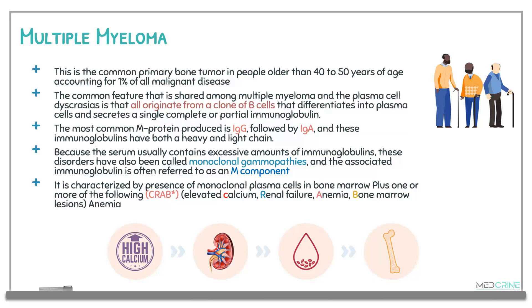Because the serum usually contains excess immunoglobulins, these disorders are known as monoclonal gammopathy, and the associated immunoglobulin is referred to as the M component. Multiple myeloma is characterized by monoclonal plasma cells in the bone marrow plus one of the following features summarized by the mnemonic CRAB: C for elevated calcium levels (hypercalcemia), R for renal failure, A for anemia, and B for bone marrow lesions.